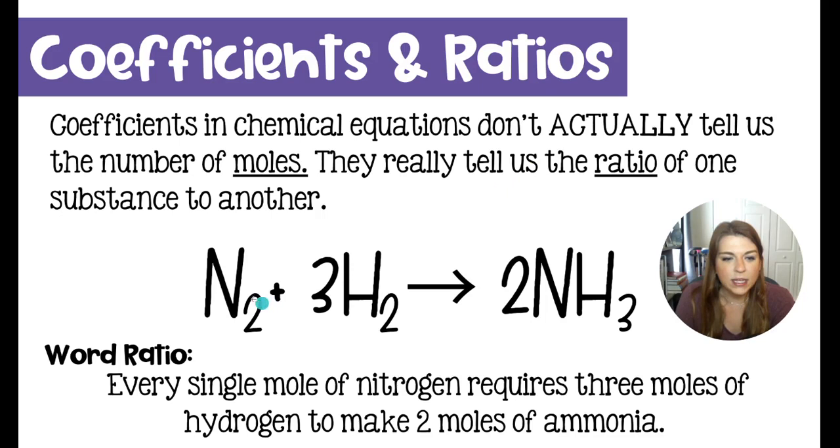This is telling us that for every one mole of nitrogen, you are required to use three moles of hydrogen in order to get two moles of ammonia. Remember, there's an imaginary one out here. Our ratio here is one to three to two.